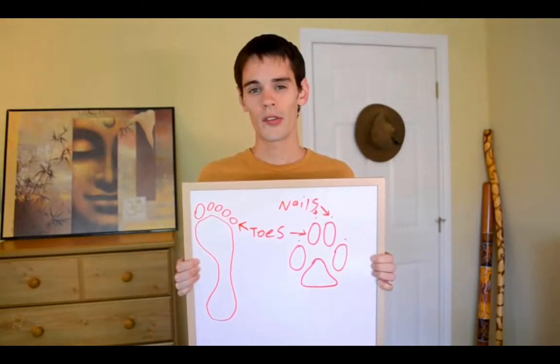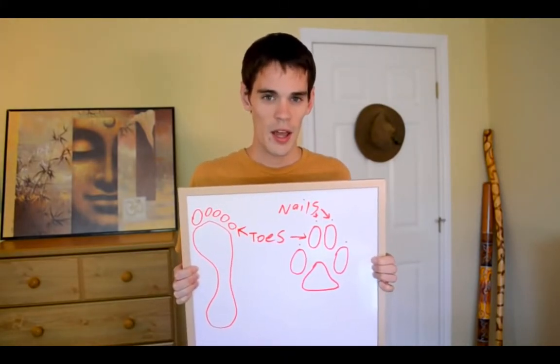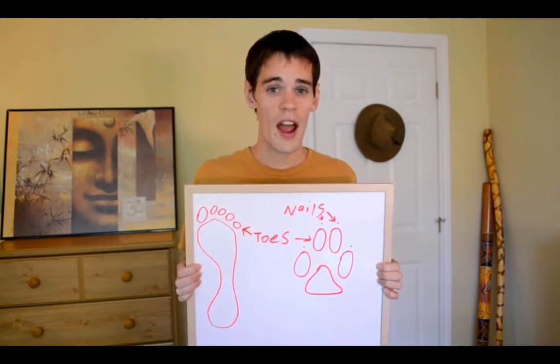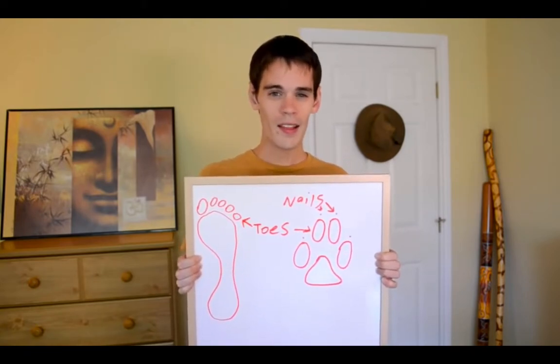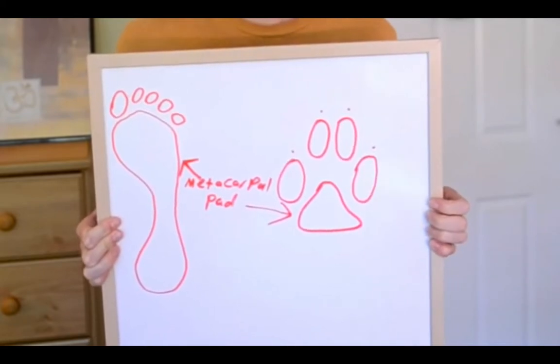The next thing to look at is nails. Looking for nails can be really helpful because some animals, like the canine family, have nails that usually register in tracks, whereas other animals, like cats, usually don't. The relative sharpness versus dullness of the nails can also be a good indicator of domestic animals versus wild animals.